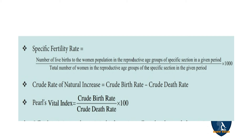The crude rate of natural increase — that is, the rising population — equals crude birth rate minus crude death rate. Pearl's vital index equals crude birth rate divided by crude death rate, multiplied by 100.